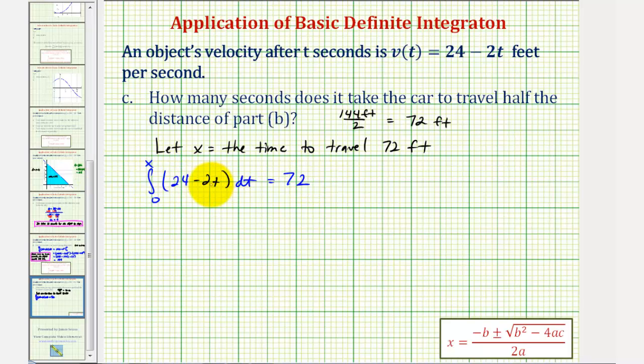So for the next step, we'll find the antiderivative function, which would be 24t - t². Evaluate this at the upper limit of integration of x, then the lower limit of integration of 0.